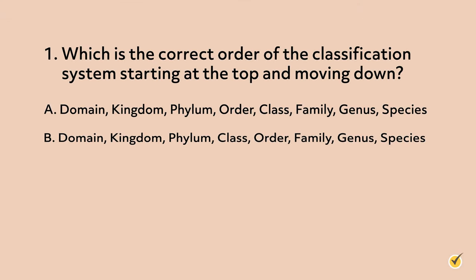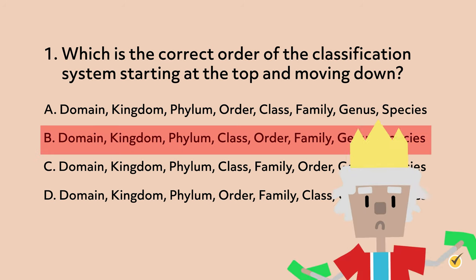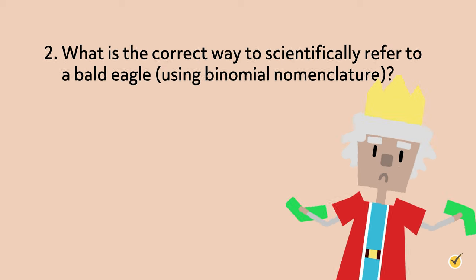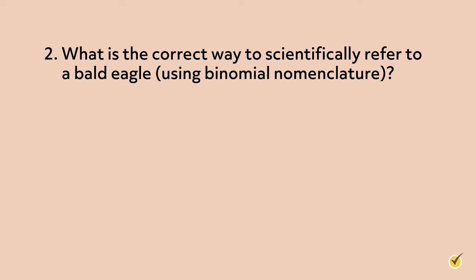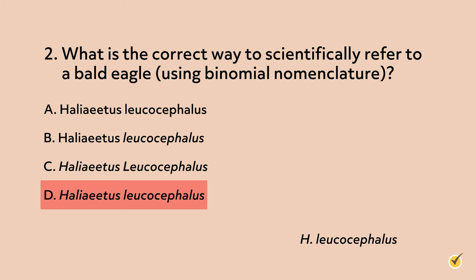Question 1: Which is the correct order of the classification system starting at the top and moving down? The correct answer is B. Remember the mnemonic: King Philip can only find green socks. Question 2: What is the correct way to scientifically refer to a bald eagle using binomial nomenclature? The correct answer is D. When using binomial nomenclature, the genus is always capitalized while the species stays lowercase, and both words are written in italics. Another acceptable way is to abbreviate the genus to the first letter followed by a period, so H. leucocephalus.